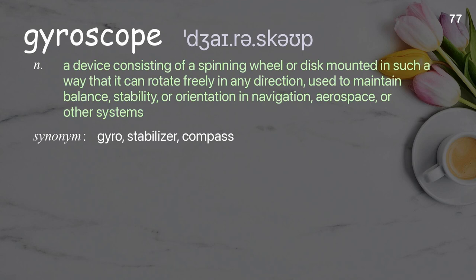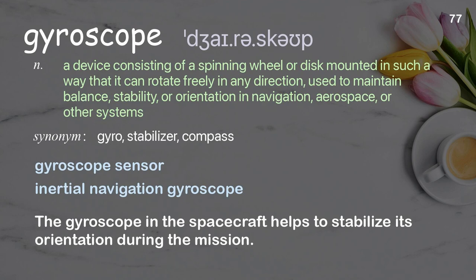Gyroscope. A device consisting of a spinning wheel or disc mounted in such a way that it can rotate freely in any direction, used to maintain balance, stability, or orientation in navigation, aerospace, or other systems. Examples: gyroscope sensor, inertial navigation gyroscope. The gyroscope in the spacecraft helps to stabilize its orientation during the mission.